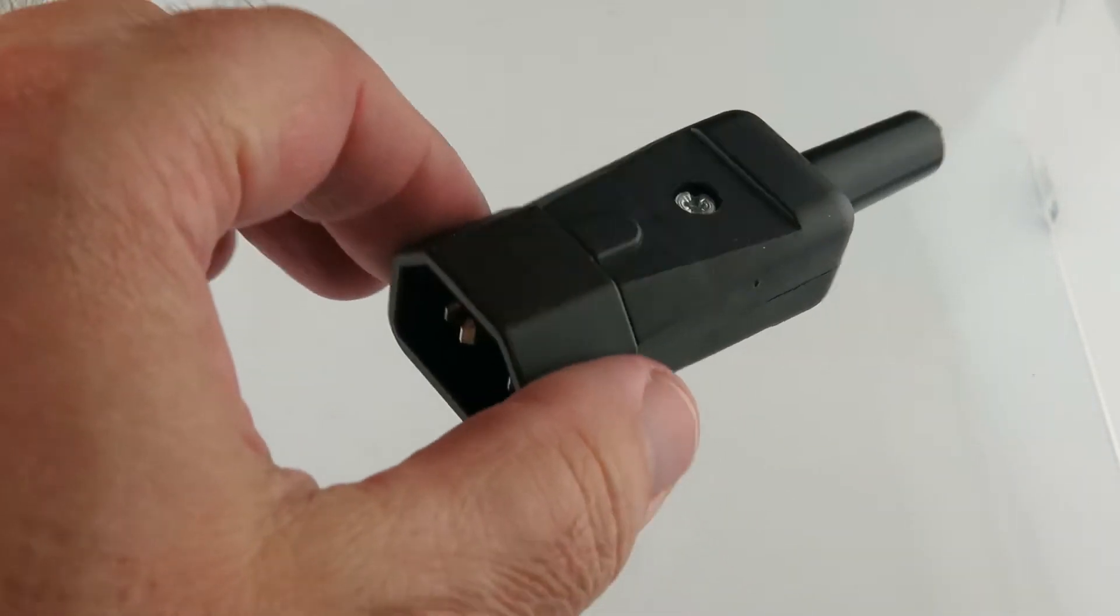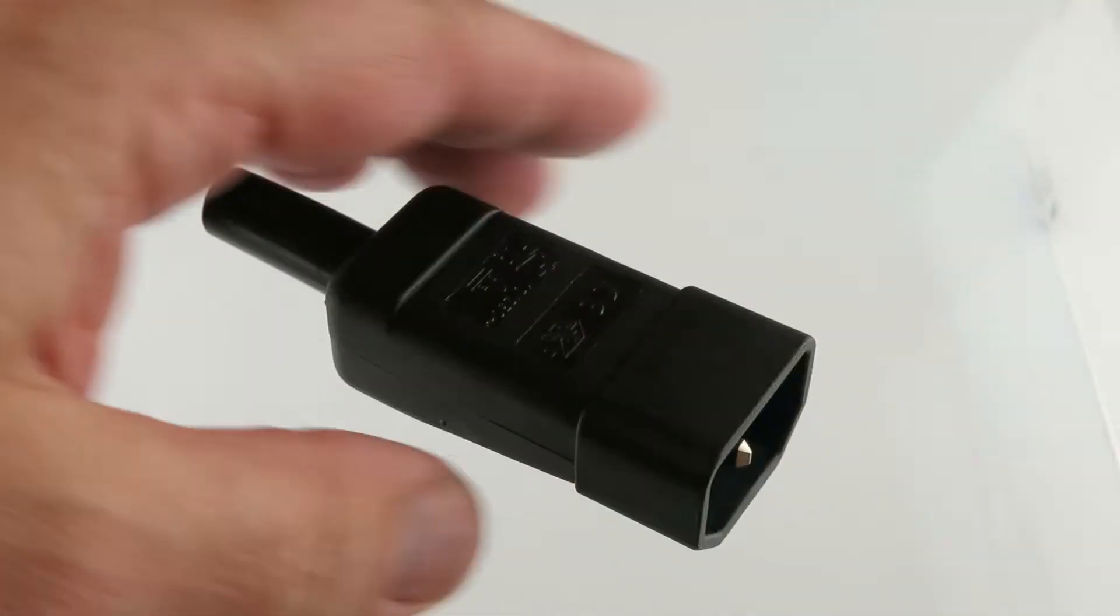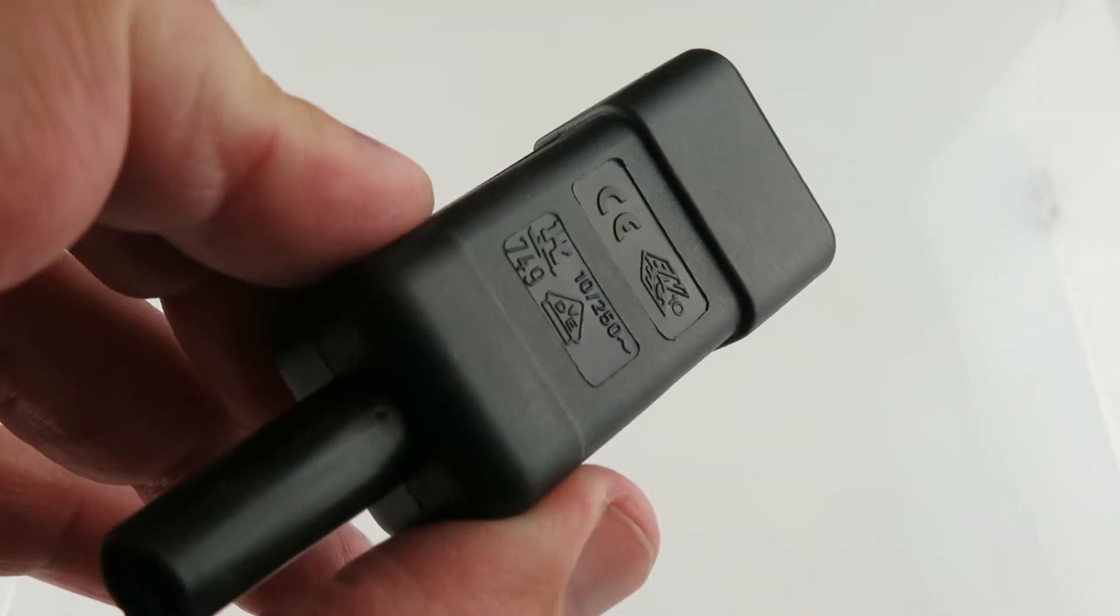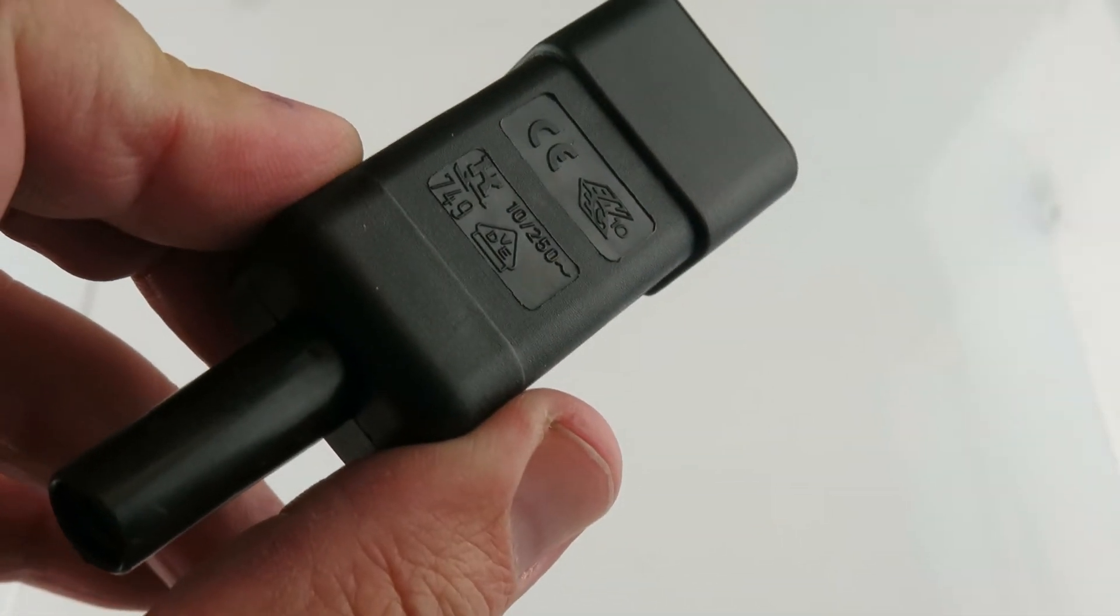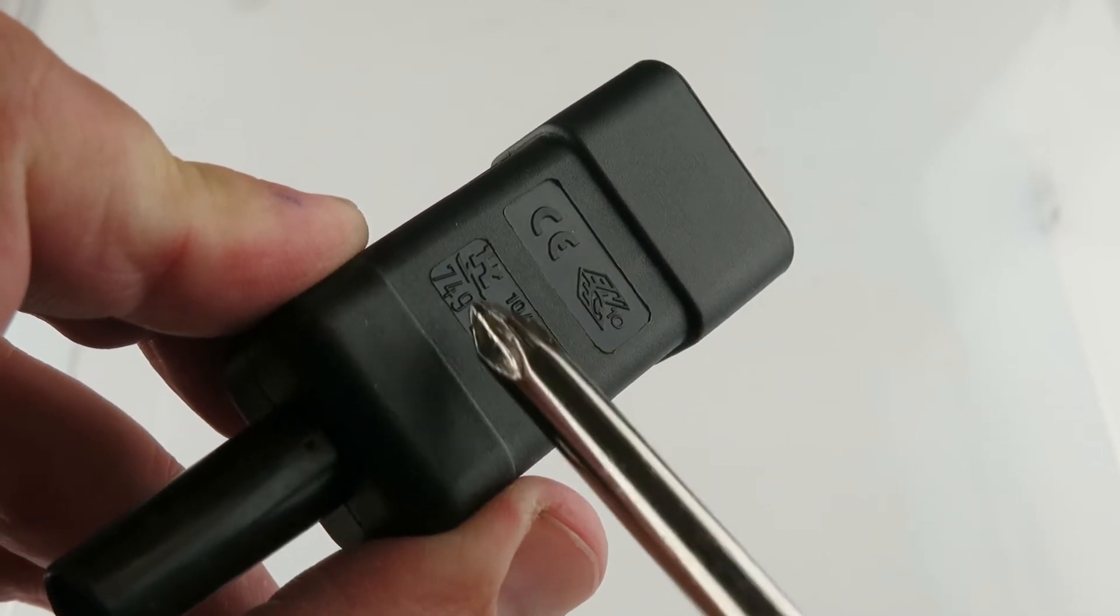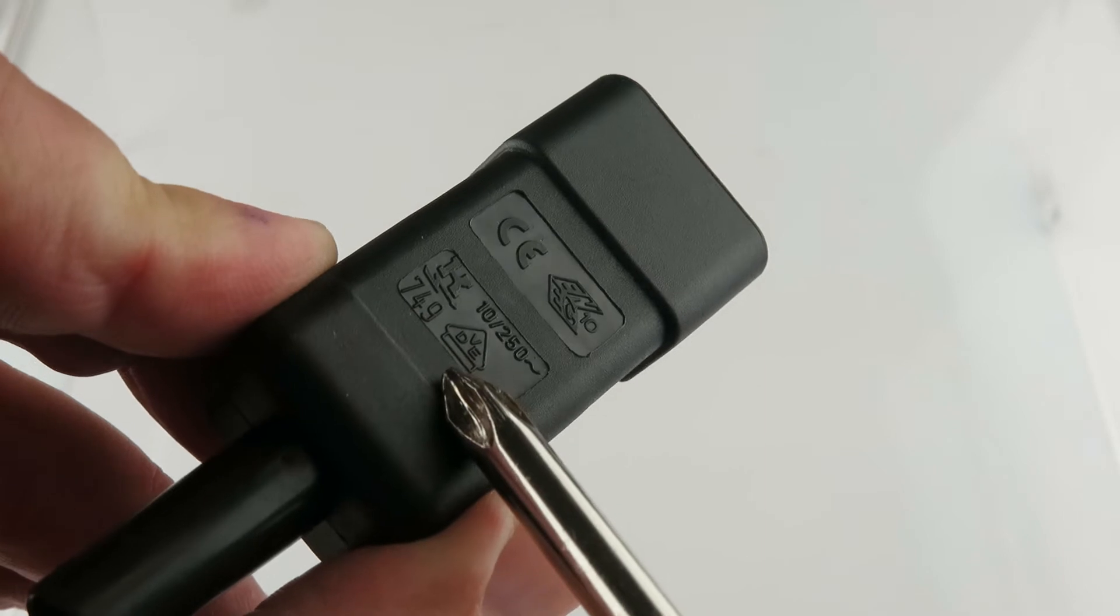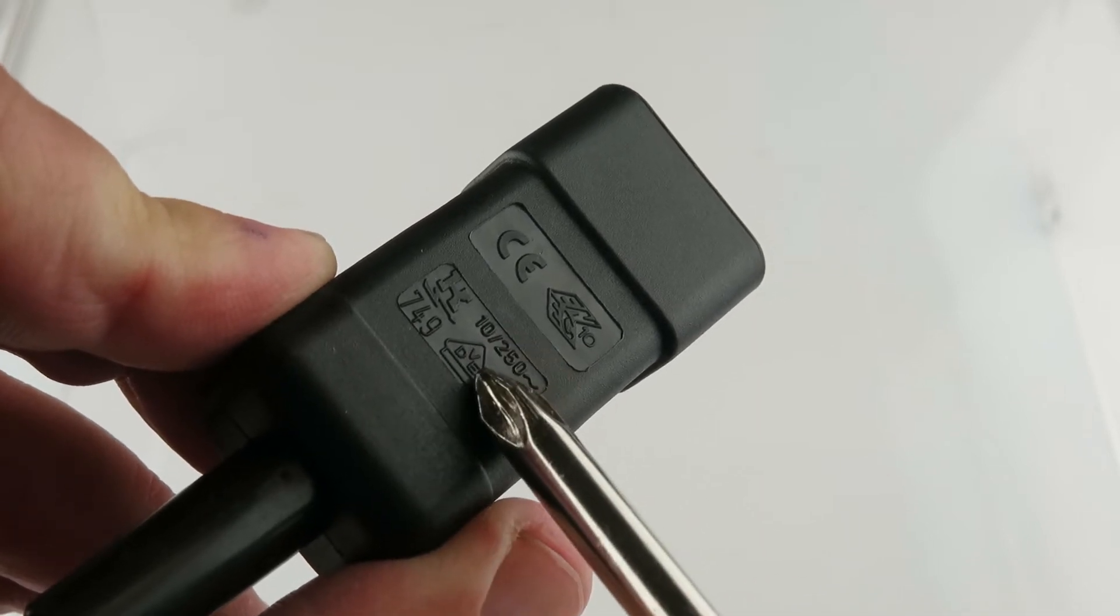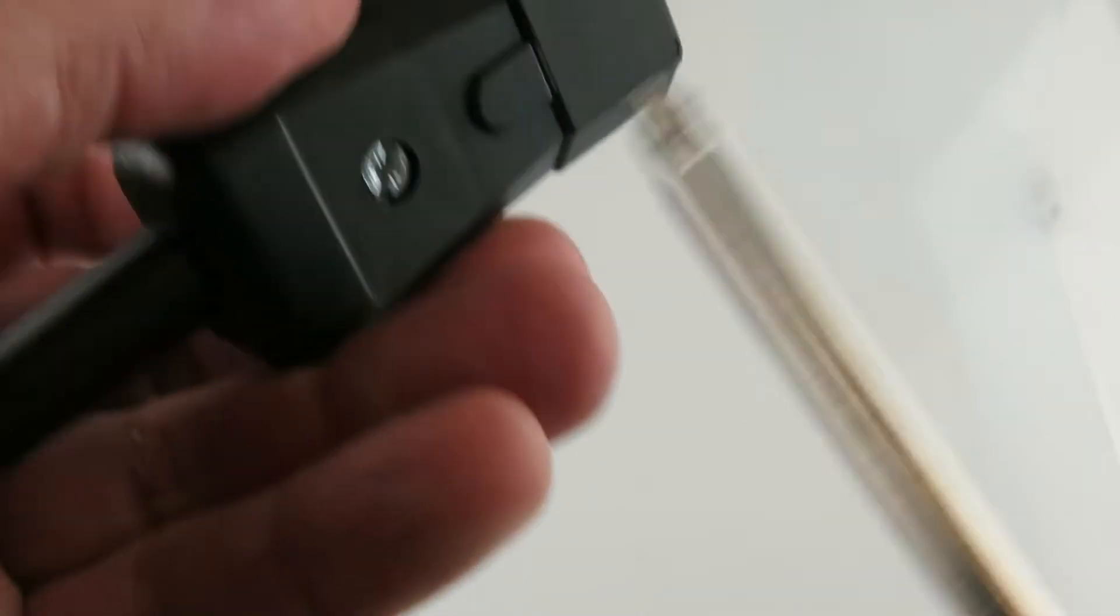Alright, let's get right down to it. On this part here it says 10A and 250. There's a K with a lightning bolt, 749, and then VDE. Alright, I haven't opened this up before.